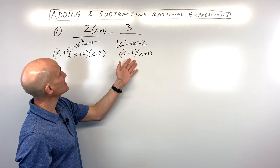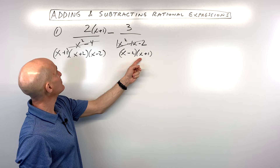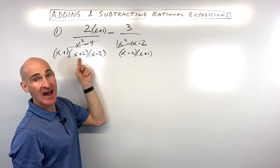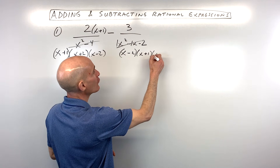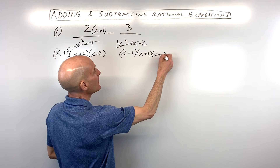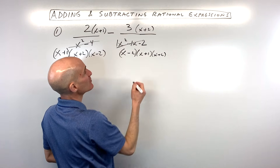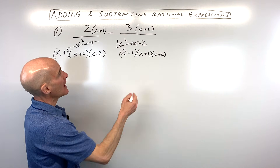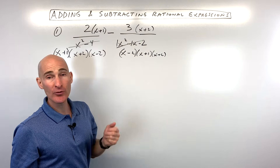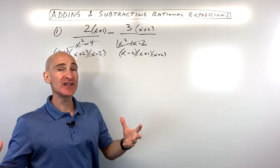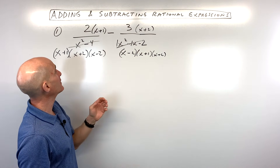Over here, this denominator has x minus 2 and x plus 1, but it's missing an x plus 2. So I'm going to multiply the numerator and denominator by x plus 2. Anything divided by itself is 1, so 1 times that original fraction doesn't change the value — it just changes the way it looks.